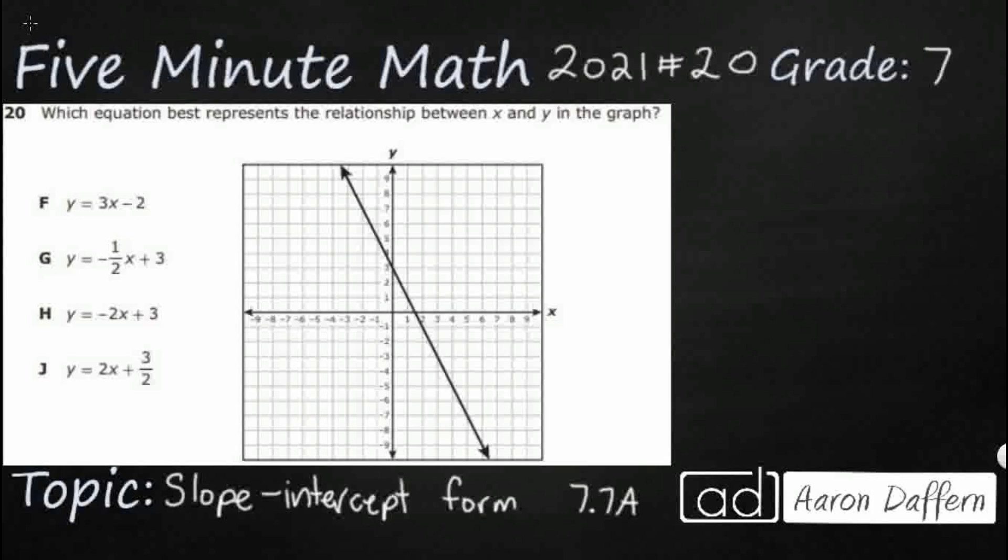So we have this graph here, no points labeled for us, and we need to match that to our equation. You notice all of these equations have y equals, they've got a number or a fraction with an x and then plus or minus another number. So that's the standard form here, and it's called the slope intercept form: y equals mx plus b.